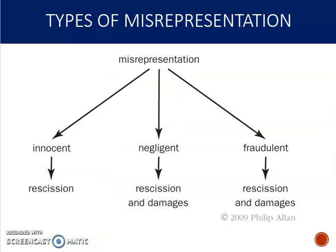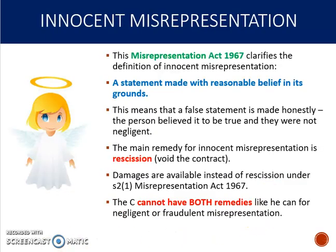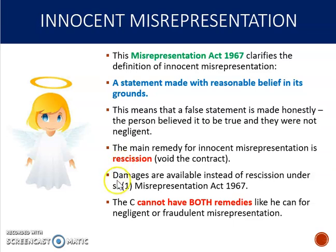Once it's been established that you have a false statement of fact which did induce the contract, you then have to decide what type of misrepresentation it was — innocent, negligent, or fraudulent. The type will impact what remedy is available to the claimant. An innocent misrepresentation is a statement made with reasonable belief in its truth — the person honestly believed it, they weren't negligent. The main remedy for innocent misrep is rescission, meaning we void the contract. However, you can request damages instead of rescission under section 2(1) of the Misrepresentation Act, but for innocent misrep you can't have both.